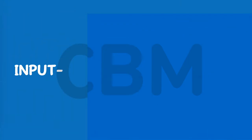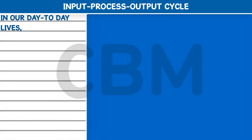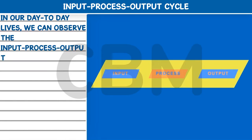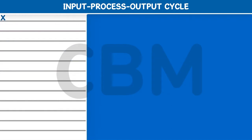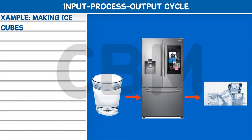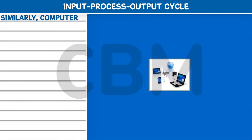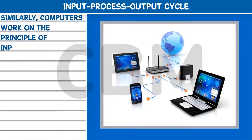Input-Process-Output Cycle: In our day-to-day lives, we can observe the input-process-output cycle in a variety of things. For example, making ice cubes — water is put in a refrigerator to process and form ice cubes. Similarly, computers work on the principle of the Input-Process-Output Cycle.